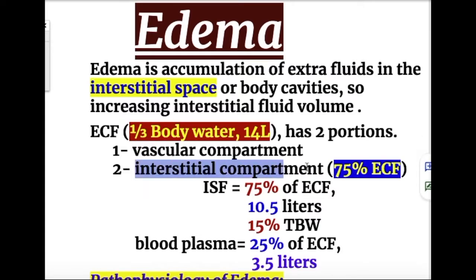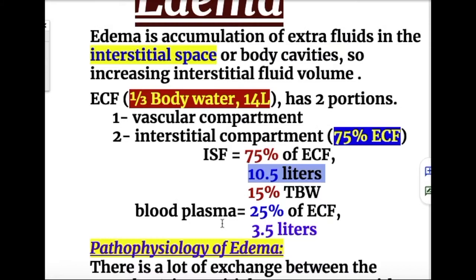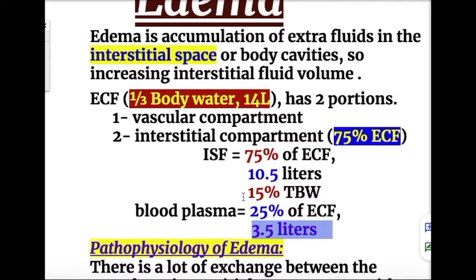The interstitial compartment comprises 75% of the extracellular fluid, which is about 10.5 liters, and the blood plasma contains 25% of the extracellular fluid, which is about 3.5 liters.